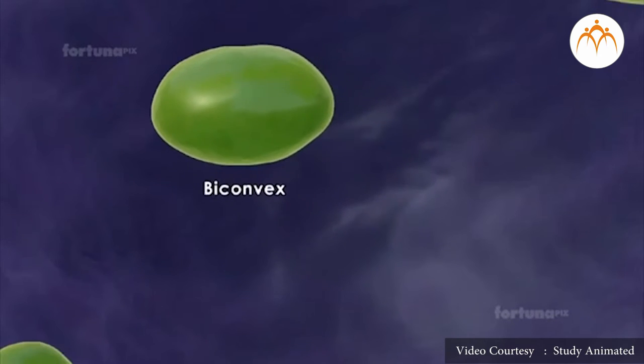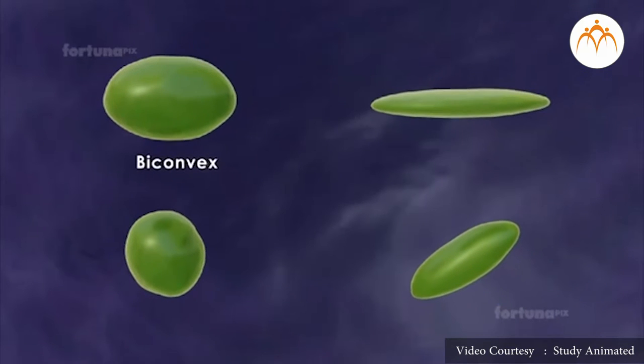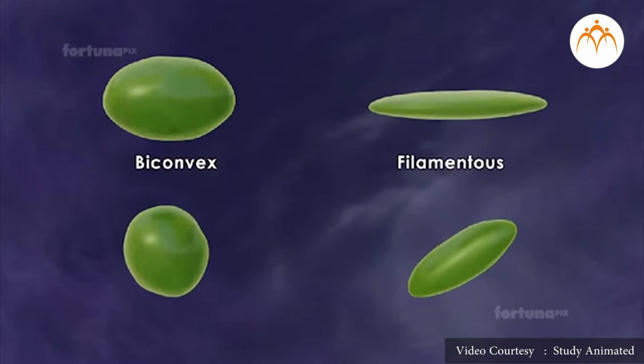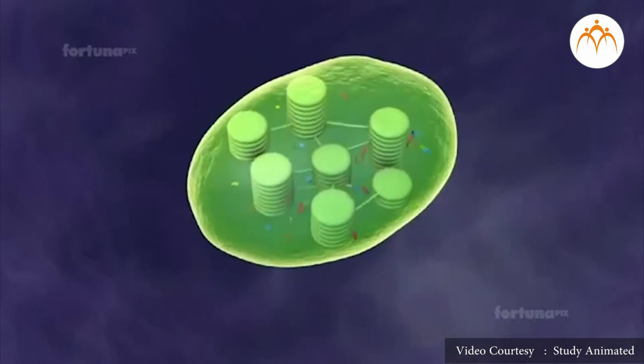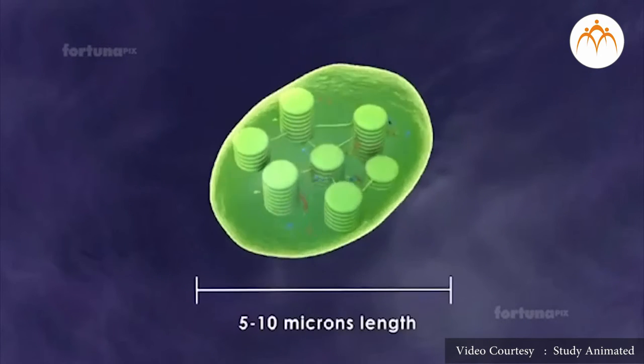Although chloroplasts are quite variable in size and shape, they share many structural features. Most often, they are oval with dimensions of 2 to 4 micrometers by 5 to 10 micrometers. But some algae possess one huge chloroplast that fills much of the cell.